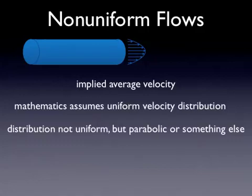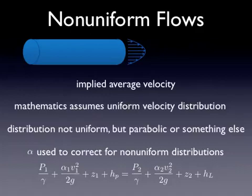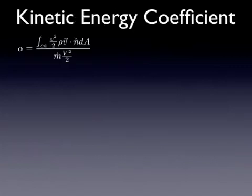This parabolic distribution is common with laminar flows. And you can see it satisfies the no slip boundary condition. It starts at zero at the pipe walls and is a maximum velocity towards the center. So these alphas go into the energy equation and they're used to adjust and correct for these non-uniform distributions, which is really what's happening.